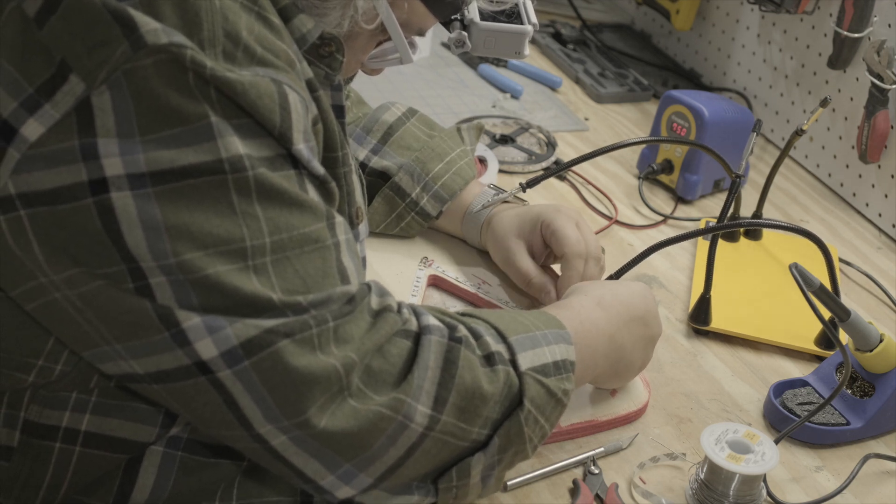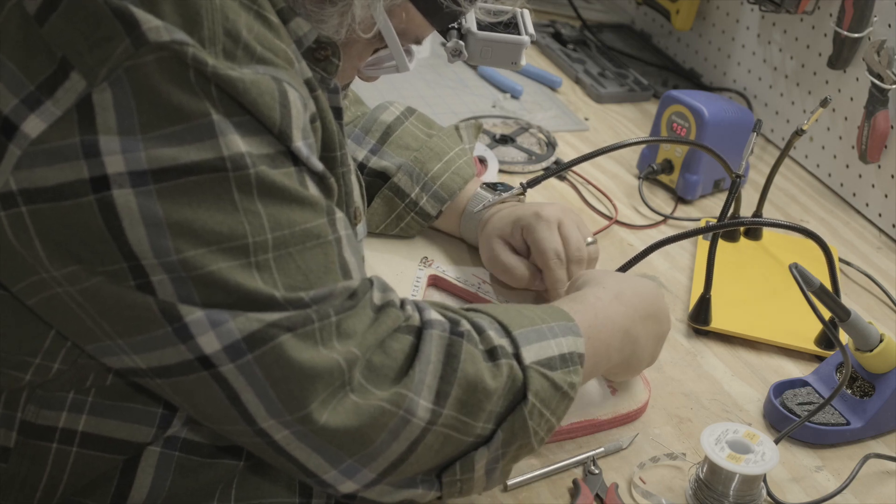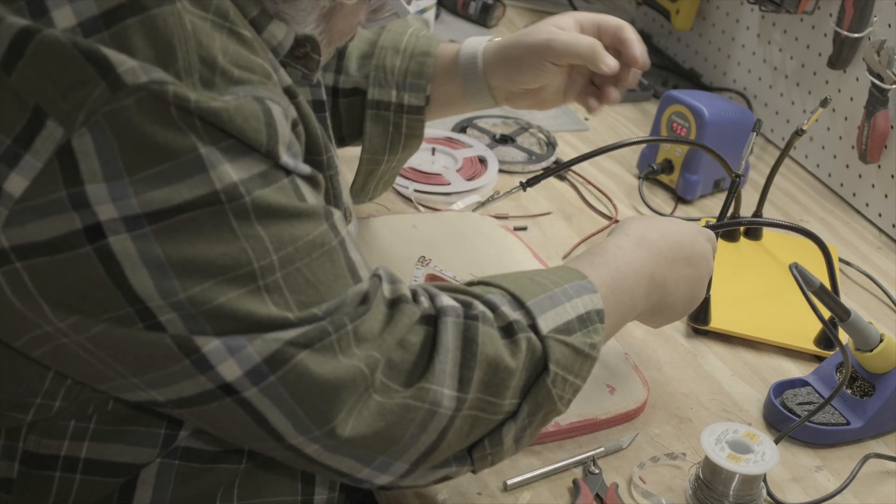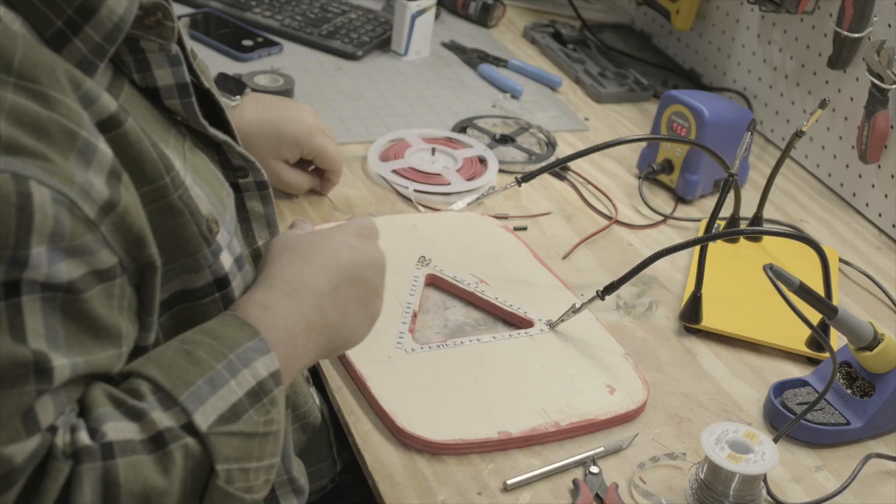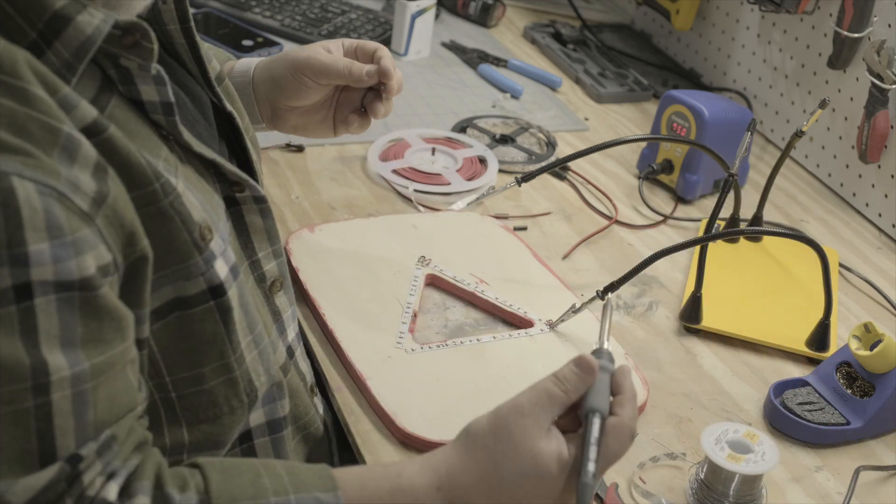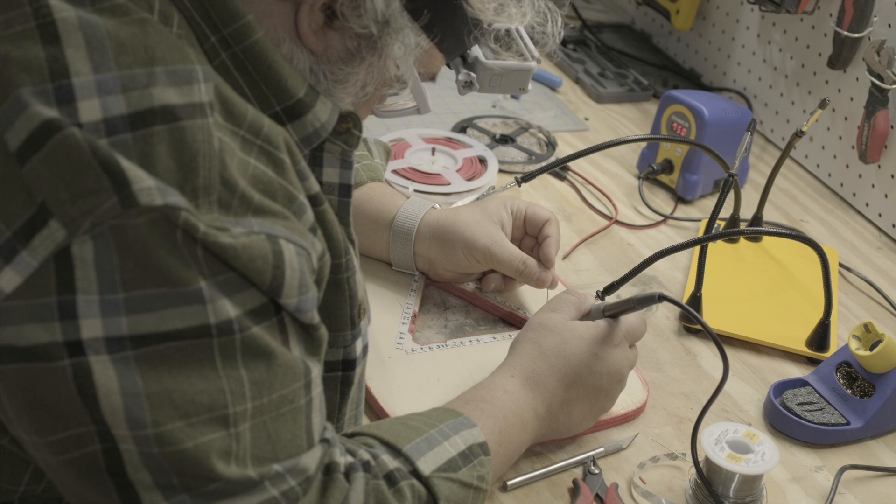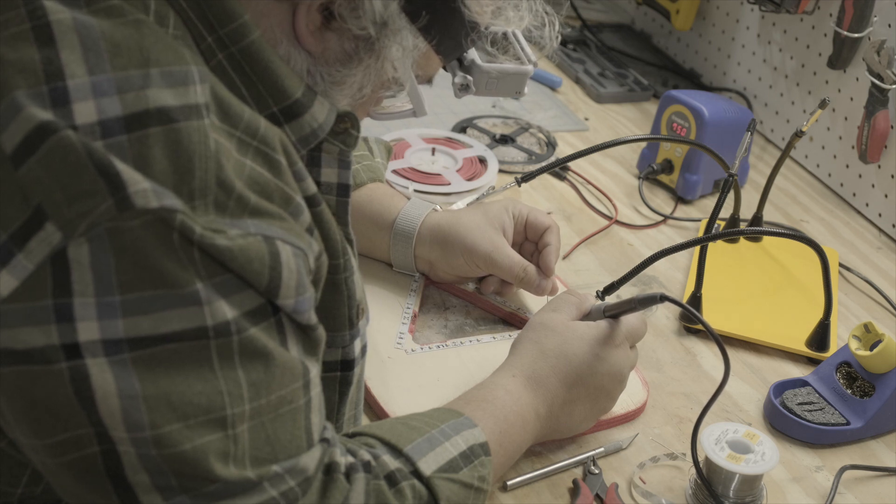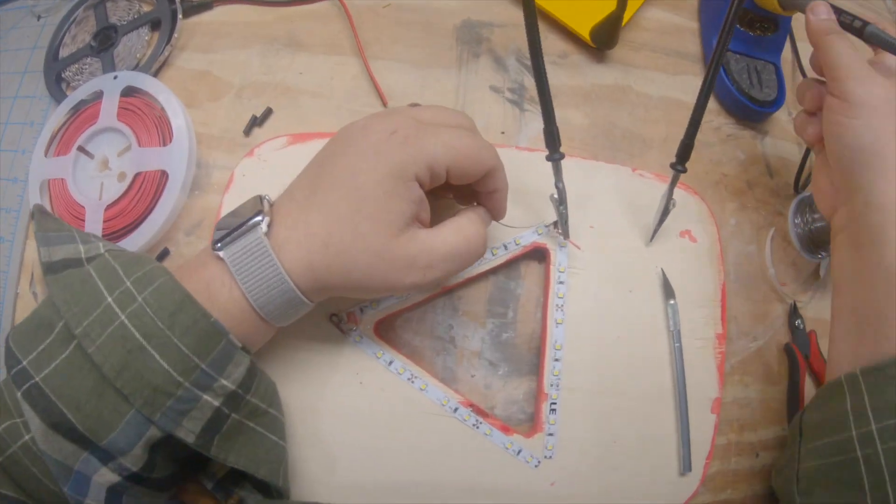The next step up are the RGB ones which are about 20 bucks a roll and you've probably seen them - they have the little remotes that come with them that do basic color changing and things like fades and strobes and some kind of cheesy pre-built effects. Not a big fan of them and they're slightly harder to solder because they've got four little pins that are much closer together than these two.